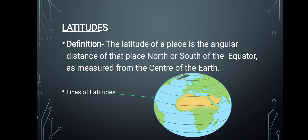The equator divides the earth into two equal parts: the Northern Hemisphere and the Southern Hemisphere. The north is the Northern Hemisphere and the south is the Southern Hemisphere. The angle of a latitude line from the equator reference is called its degree of latitude.